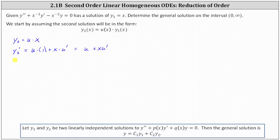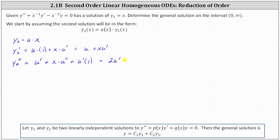Now we find y2 double prime, which is the derivative of u with respect to x, giving u prime, and then plus the derivative of x·u prime, which requires the product rule again: the first function x times the derivative of u prime, which is u double prime, plus u prime times the derivative of x, which is one. Simplifying, we have two·u prime plus x·u double prime.